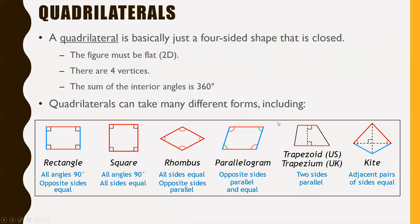Into quadrilaterals now, which is the main focus for today. A quadrilateral is basically just a four-sided closed shape — by closed, we mean all the lines close together with no opening. Some of the properties of quadrilaterals include: the figure must be flat, or two-dimensional; there are four vertices, so four corners; and a really big one — the sum of the interior angles is 360 degrees.